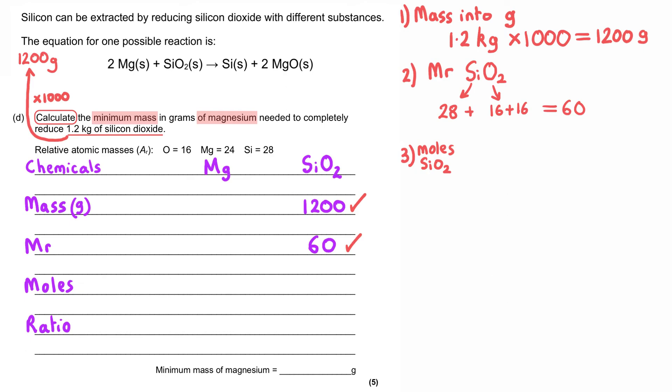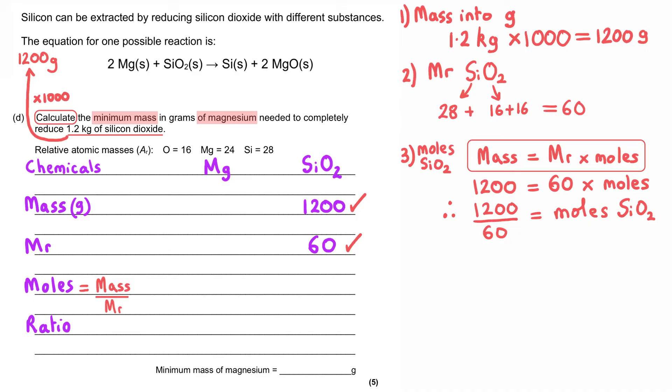And then for the third mark, we need to work out the moles of silicon dioxide, and to do that we need to use the relationship mass equals MR multiplied by moles. And so when we substitute those values in, we get 1200 grams equals 60 multiplied by moles, and then we rearrange this to find the moles of silicon dioxide, and we get 1200 divided by 60, which gives us 20 moles of silicon dioxide.